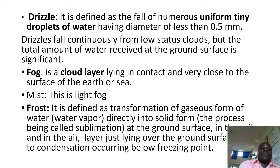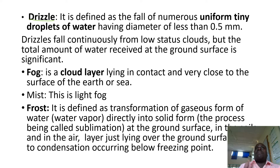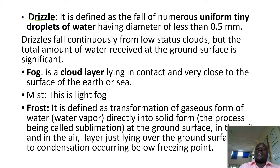Then we have drizzle. Sometimes you hear people saying it is drizzling — they don't say it is raining — because they are different. When it is drizzling, the droplets of water falling on the earth's surface are very tiny and they have a low intensity compared to that of rainfall. It is defined as the fall of numerous uniform tiny droplets of water having a diameter of less than 0.5 millimeters.